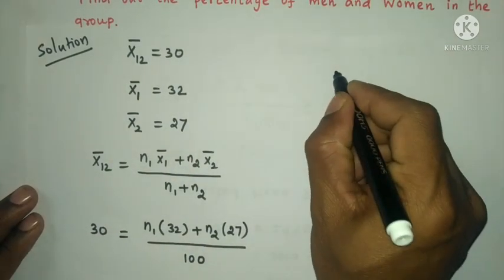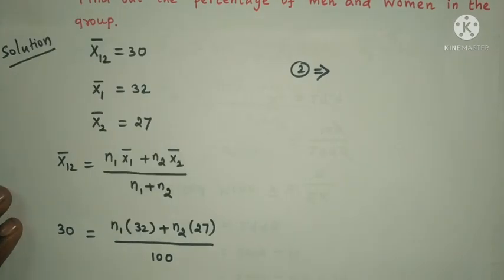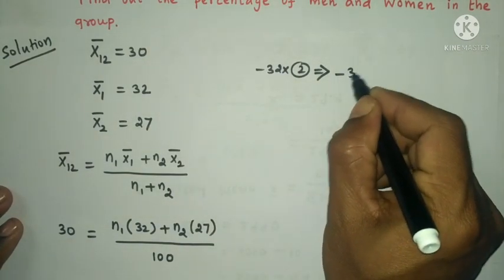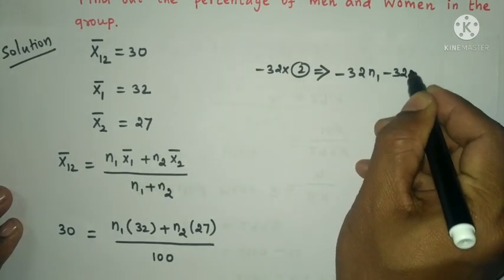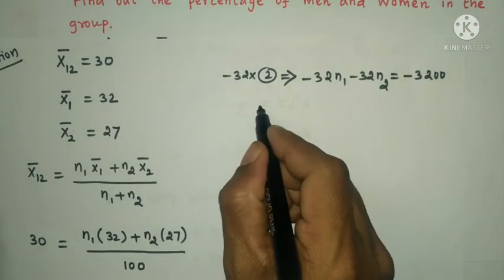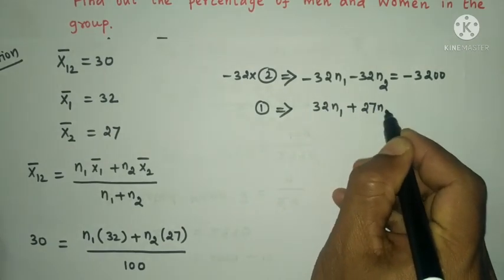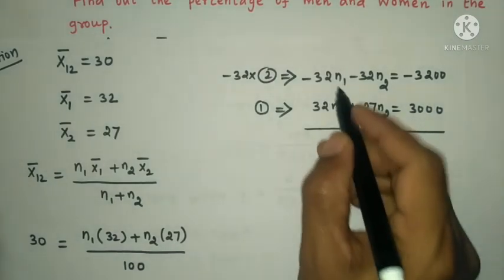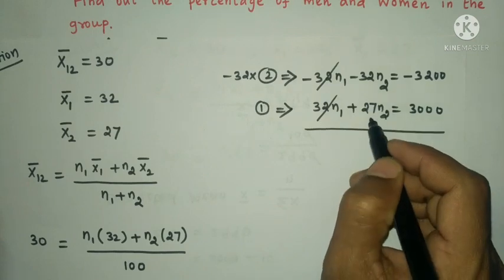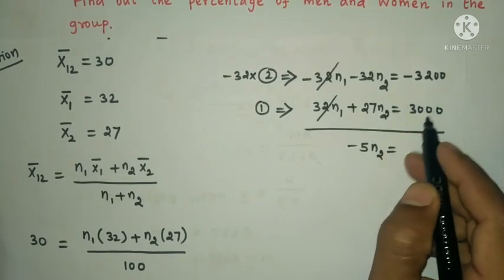Solving the two equations: from equation 2, multiply through to get −32n₁ − 32n₂ = −3200. Adding to equation 1: 32n₁ + 27n₂ = 3000, giving −5n₂ = −200.